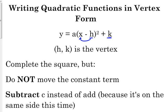So the way that we can take a function from standard form to vertex form is through completing the square. So we're going to go through the process of completing the square, but there are a couple of key differences. We're not going to move the constant term to the other side.